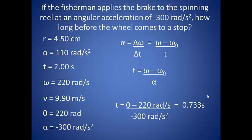The wheel has stopped spinning, so the final velocity is 0, with the initial velocity of 220 radians per second. We were given the acceleration of negative 300 radians per second squared. Working all this out gives us a time of 0.733 seconds.